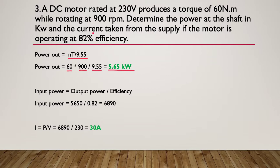So next step is to say, okay, well, that's the output. How can we get the input? Well, they told us what the efficiency percentage was. So we simply take the output power of 5.65 and divide it by 0.82, and that gives us 6.890 kilowatts of energy in.